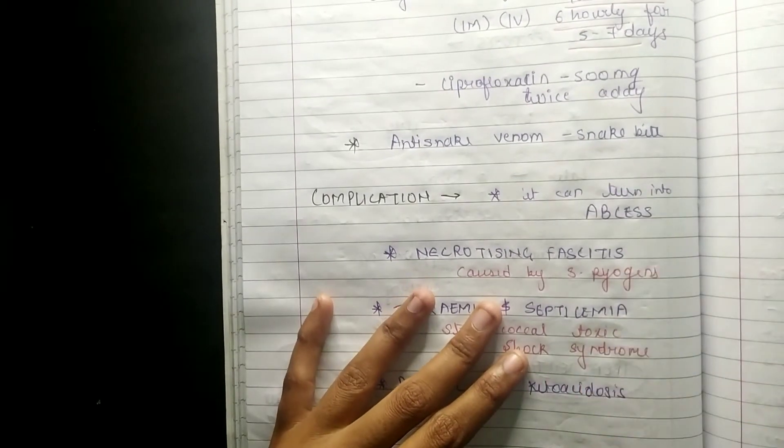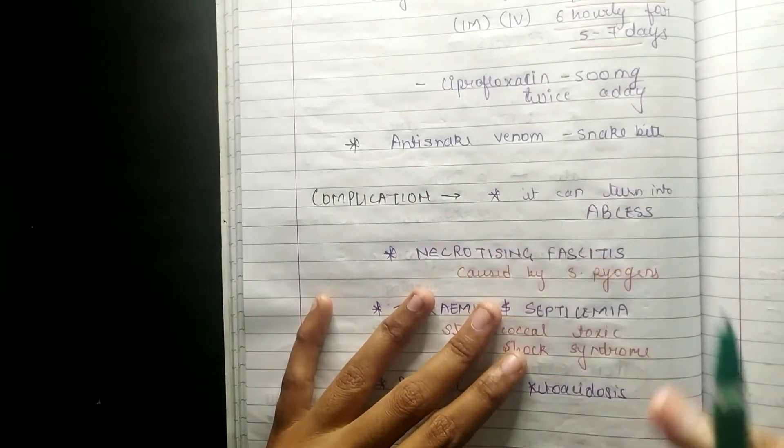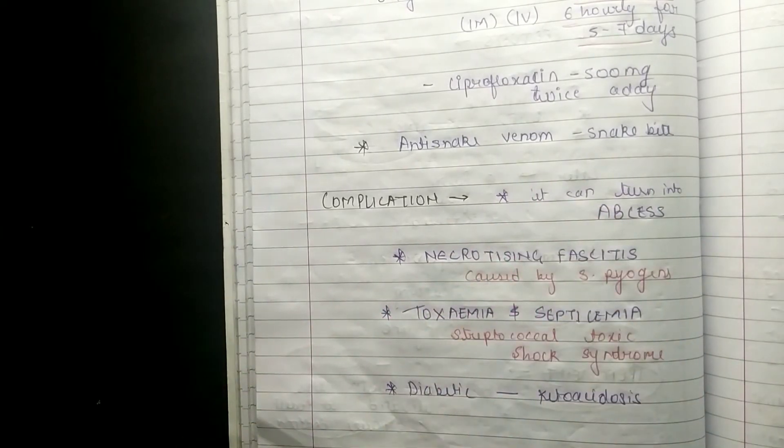Coming to ciprofloxacin, we have to give 500 mg twice a day. If the case is of snake biting or scorpion biting, then we have to give anti-snake venom.